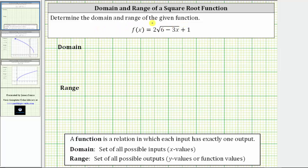We are asked to determine the domain and range of the given function. The domain is the set of all possible inputs, and because we have a function of x, the domain is the set of all possible x values. The range is the set of all possible outputs, which are the y values or function values.